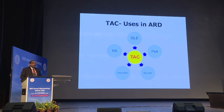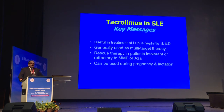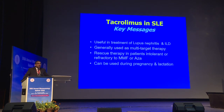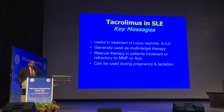In summary, tacrolimus can be utilized for lupus nephritis and interstitial lung disease, generally as part of multi-target treatment. It can also serve as rescue therapy for patients intolerant or refractory to standard care with mycophenolate or azathioprine. Calcineurin inhibitors can be used during pregnancy or lactation. Thank you very much for your kind attention.